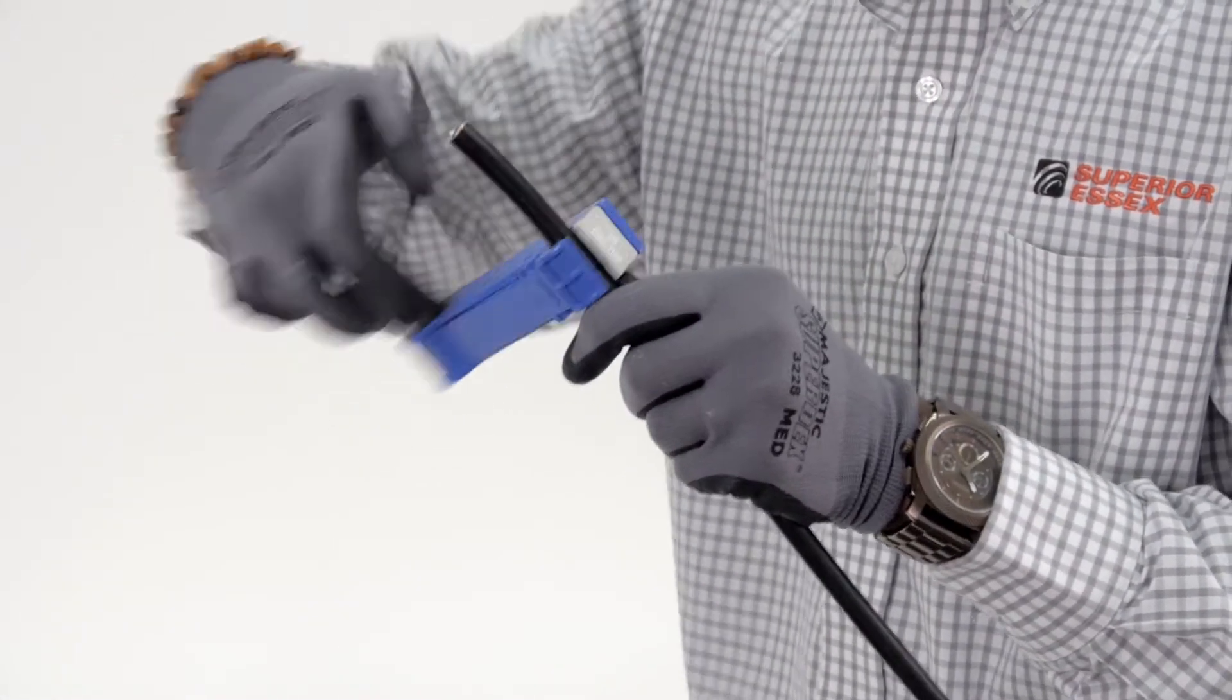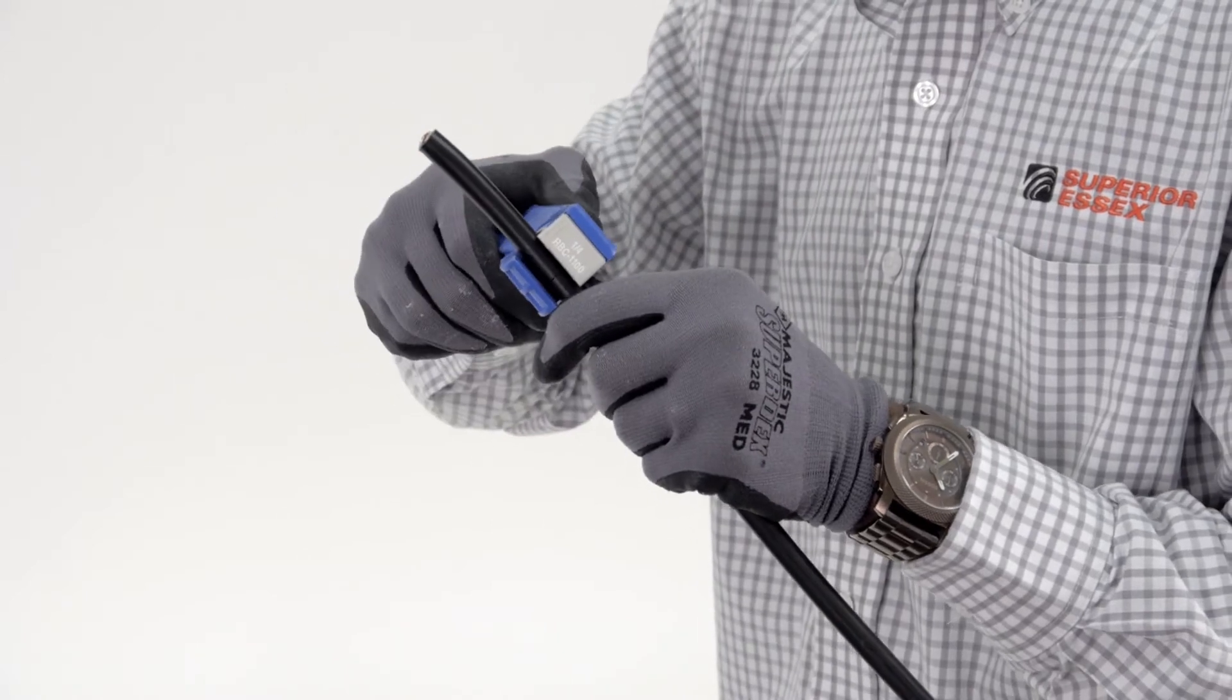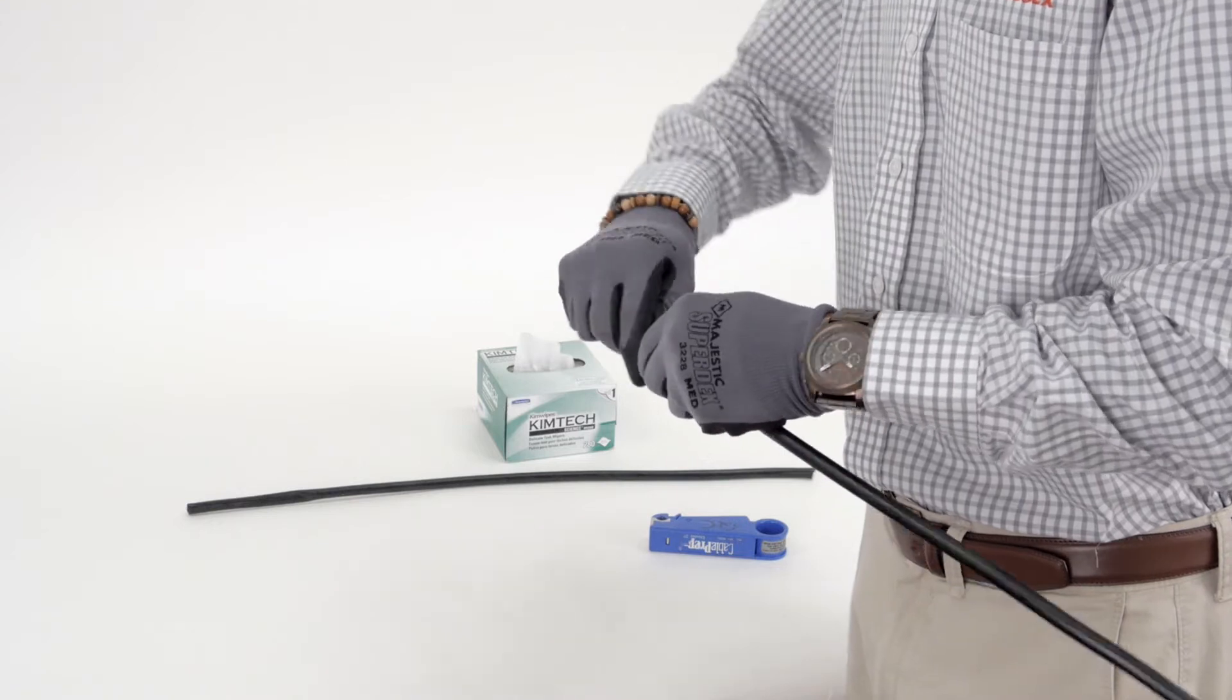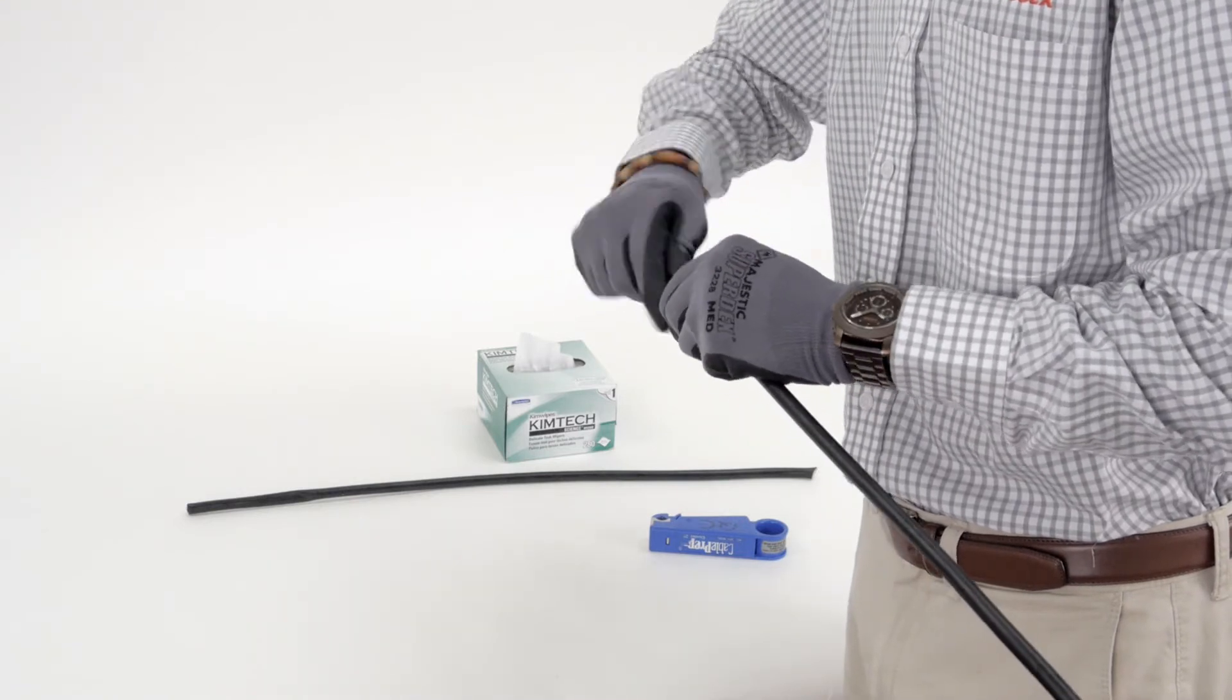With the cable cut to a desired length, use a ring cut tool to score the outer jacket. Flex the cable about the cut to remove the outer jacket and shield.